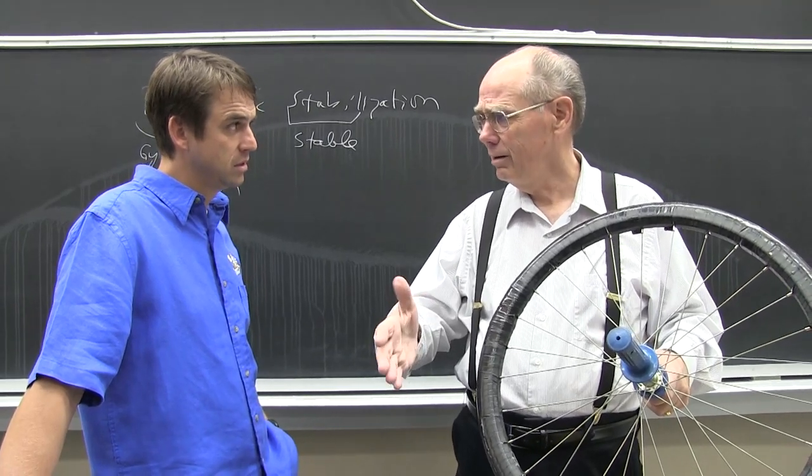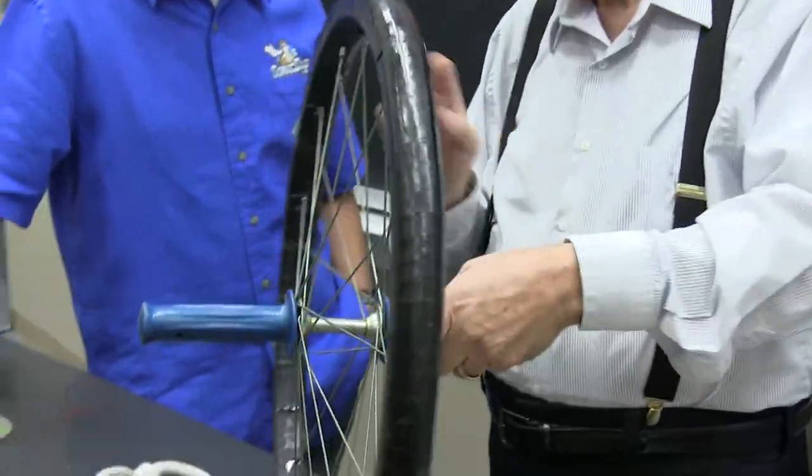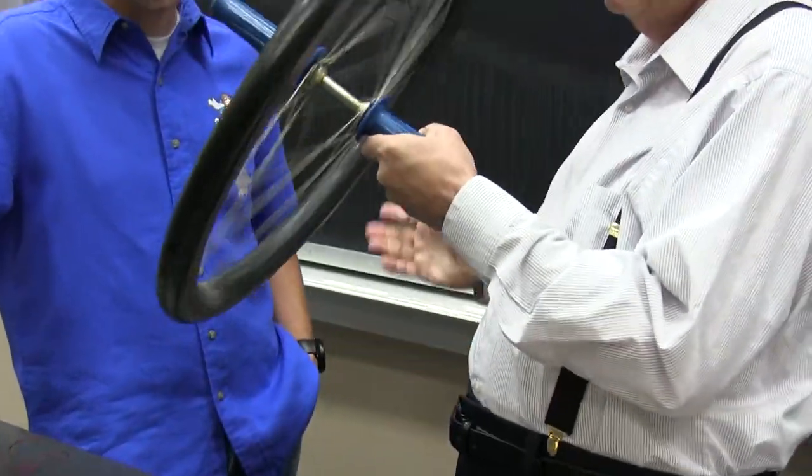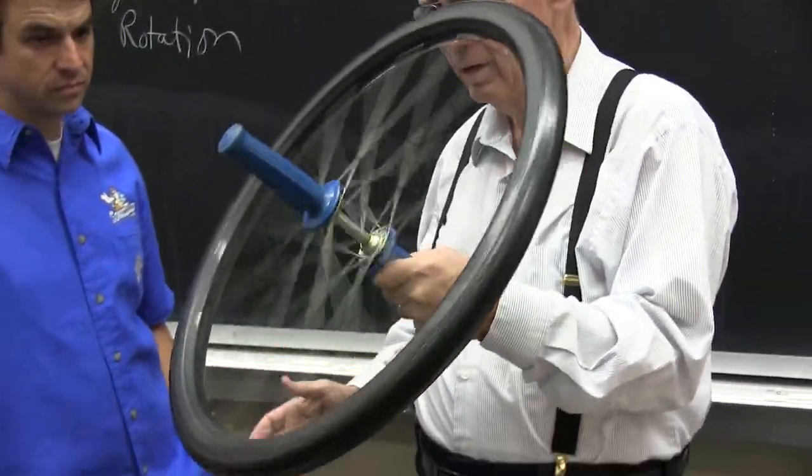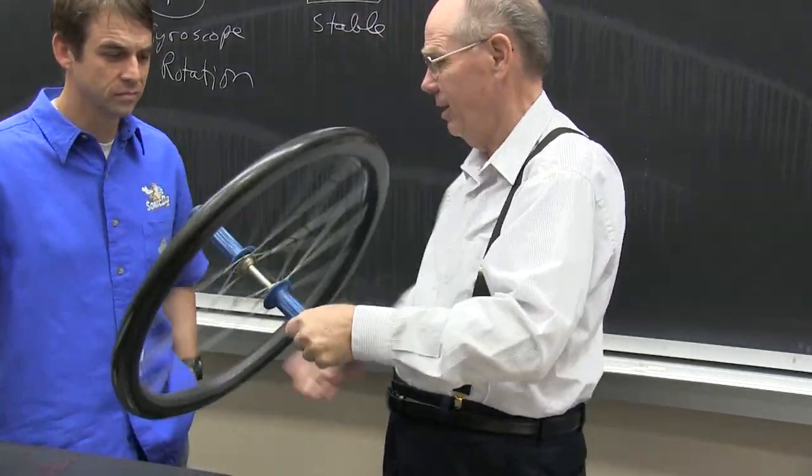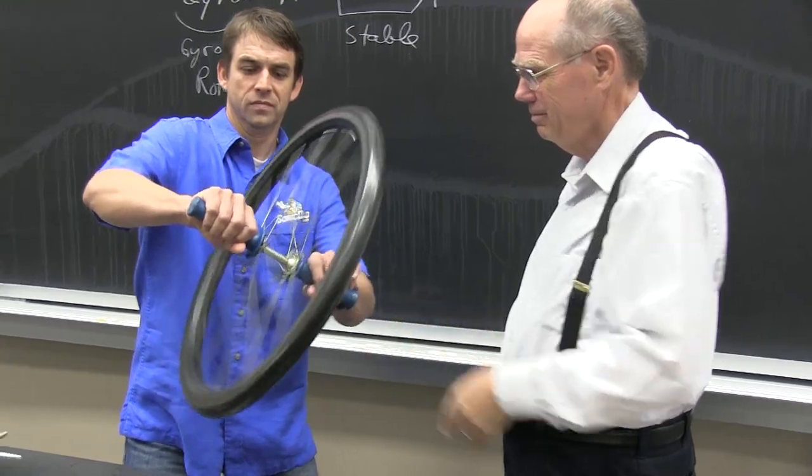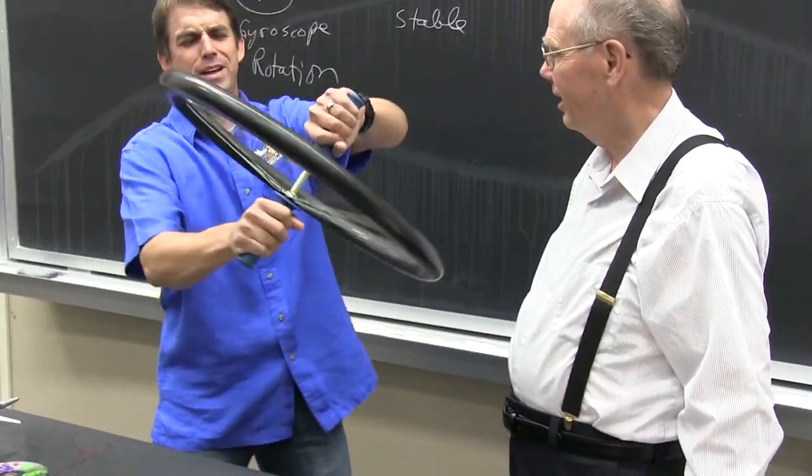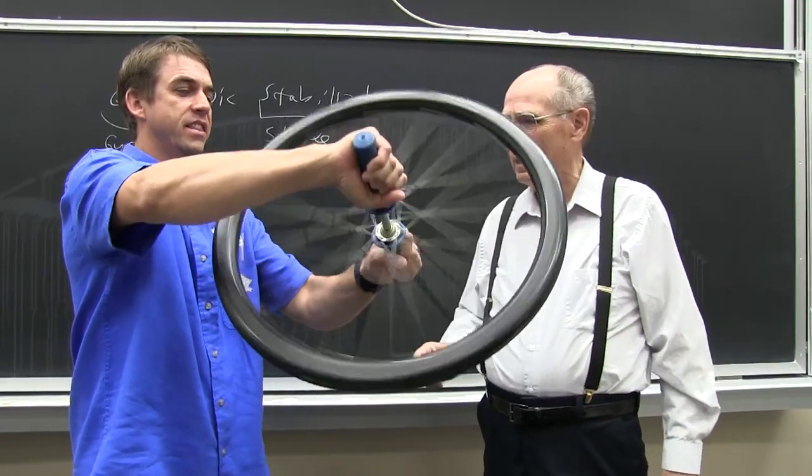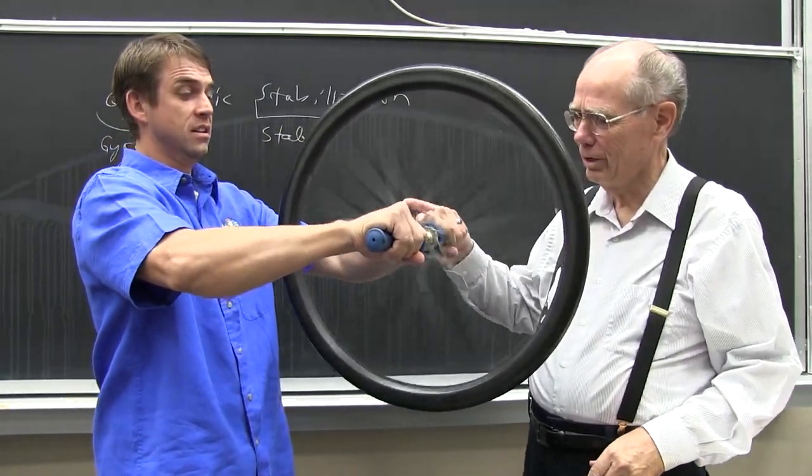Now to see what the precession is, you can take this loaded wheel and that now is very difficult to change its direction. Try it. Oh yeah, what does it do? Oh, that's weird. Yeah, really takes your arm off, doesn't it? I kind of like this.